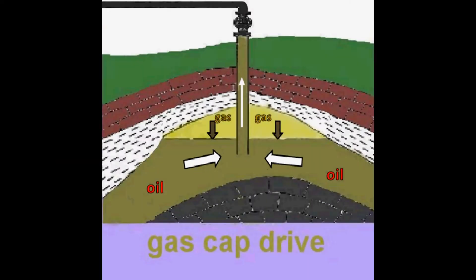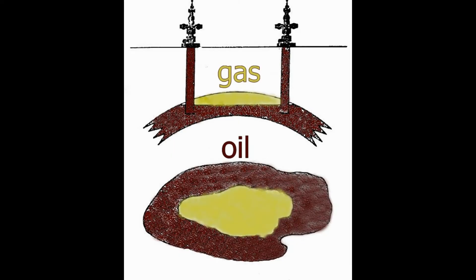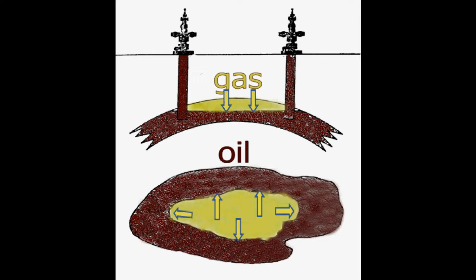The third type of an energy drive using natural energy is the gas cap drive. In a gas cap reservoir, oil and gas were formed at lower pressures, allowing for separation of the oil and gas. These reservoirs are already at bubble point pressure. The energy in this kind of drive comes from the expanding gas as the oil is produced.